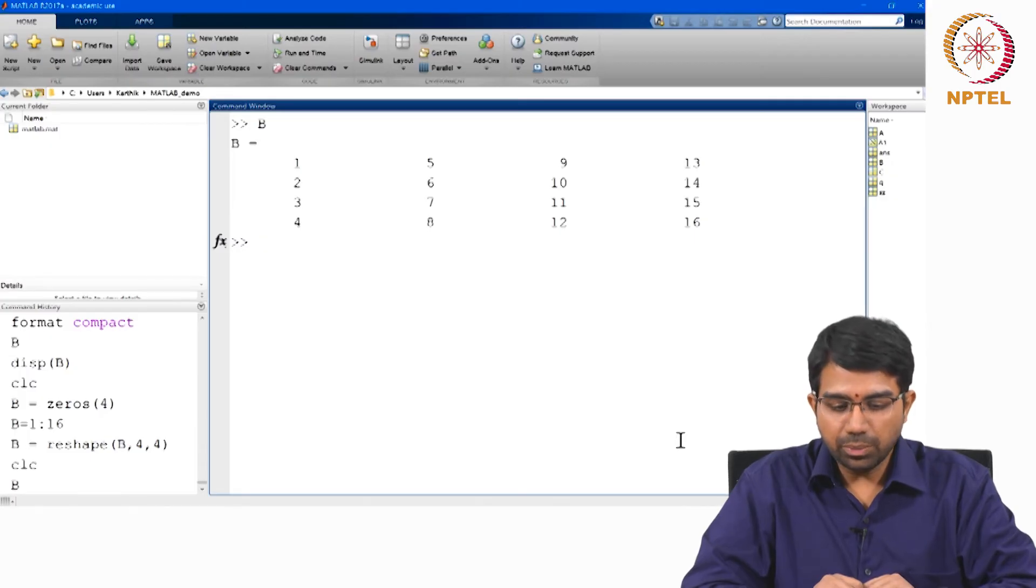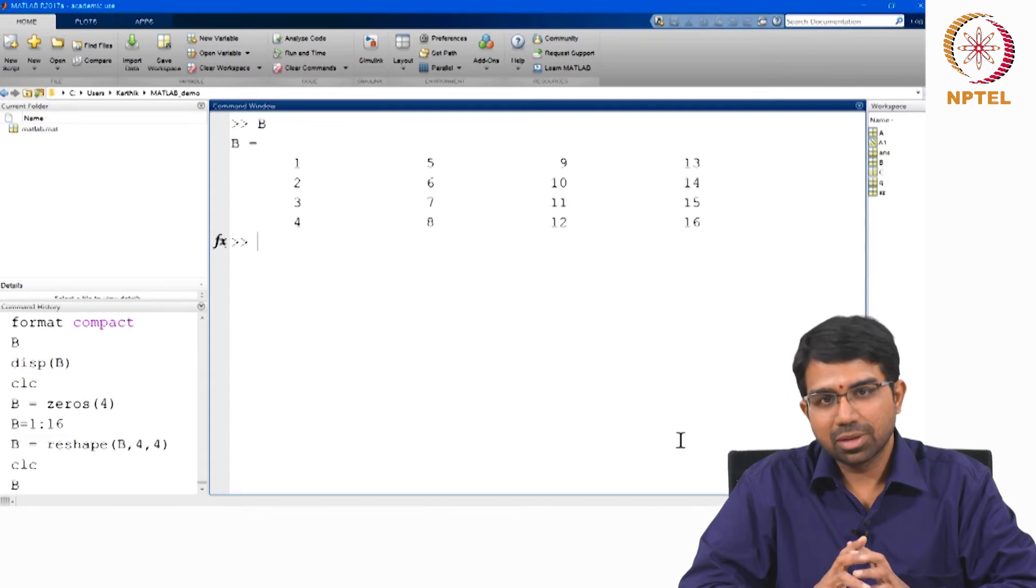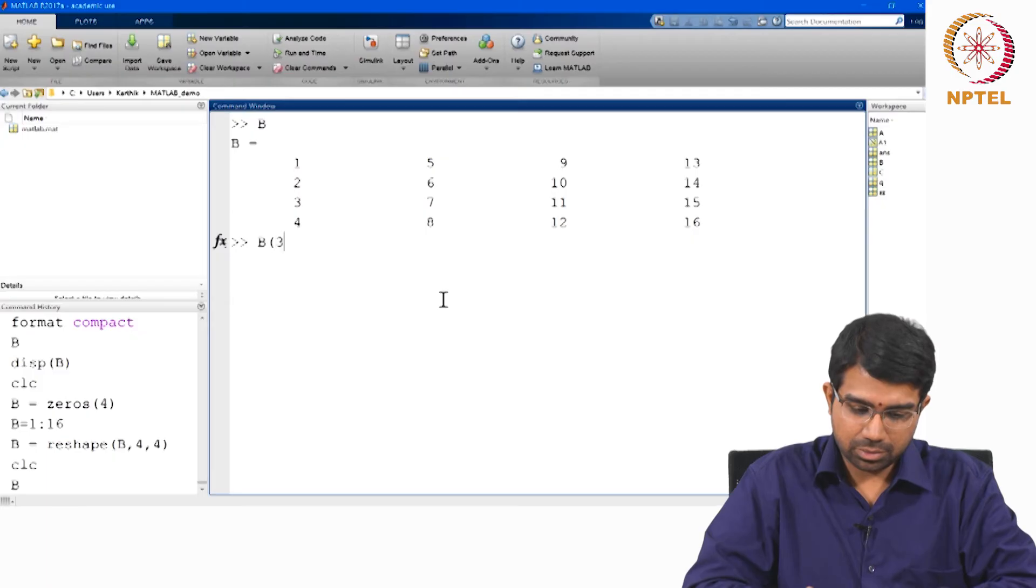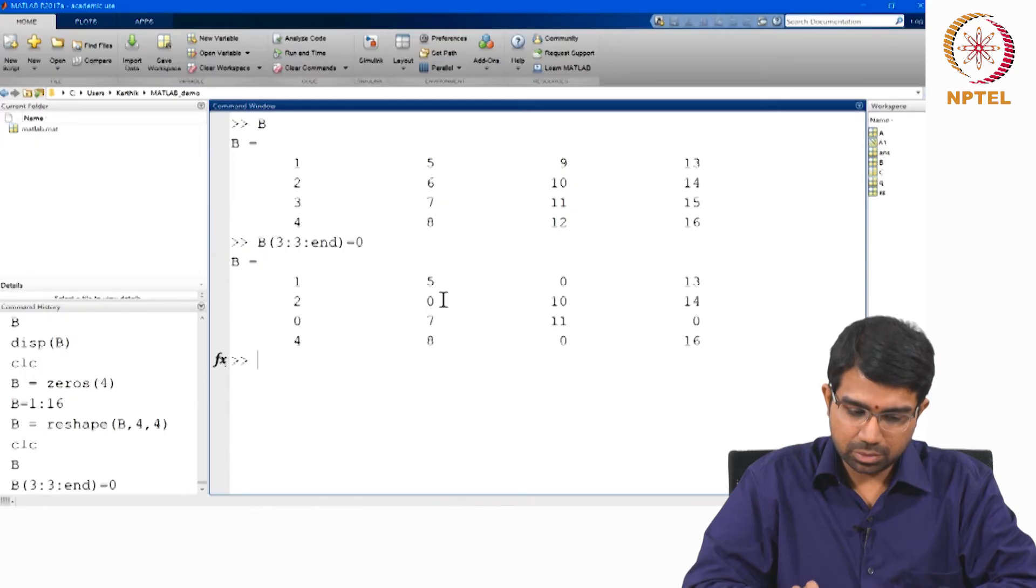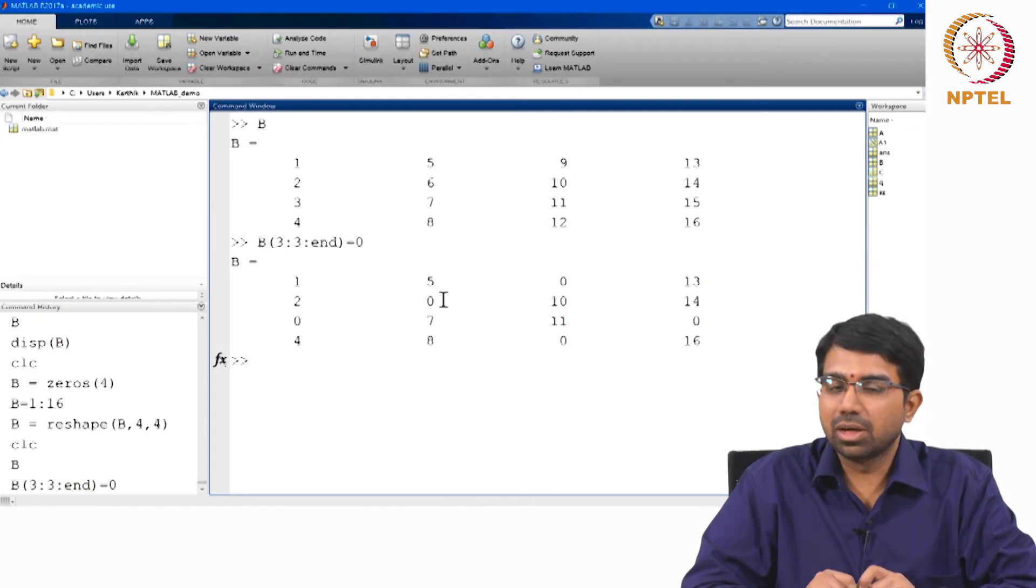So now what if you want to set every multiple of every third number in the matrix to 0? And what if you want to change all the 0s to minus 5?